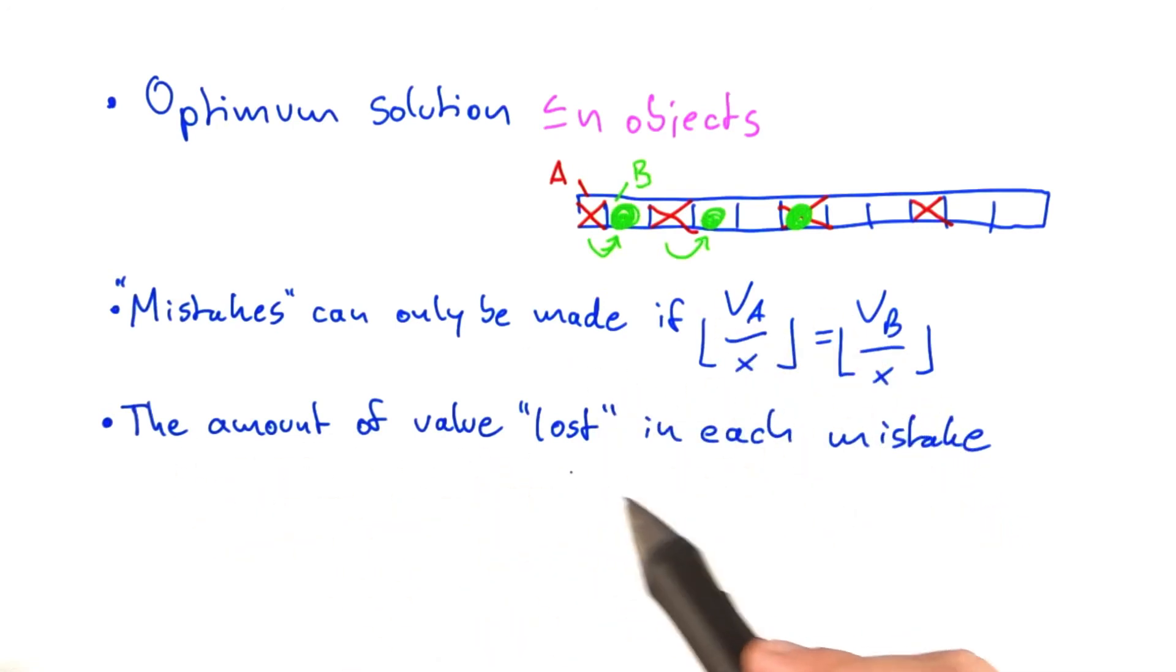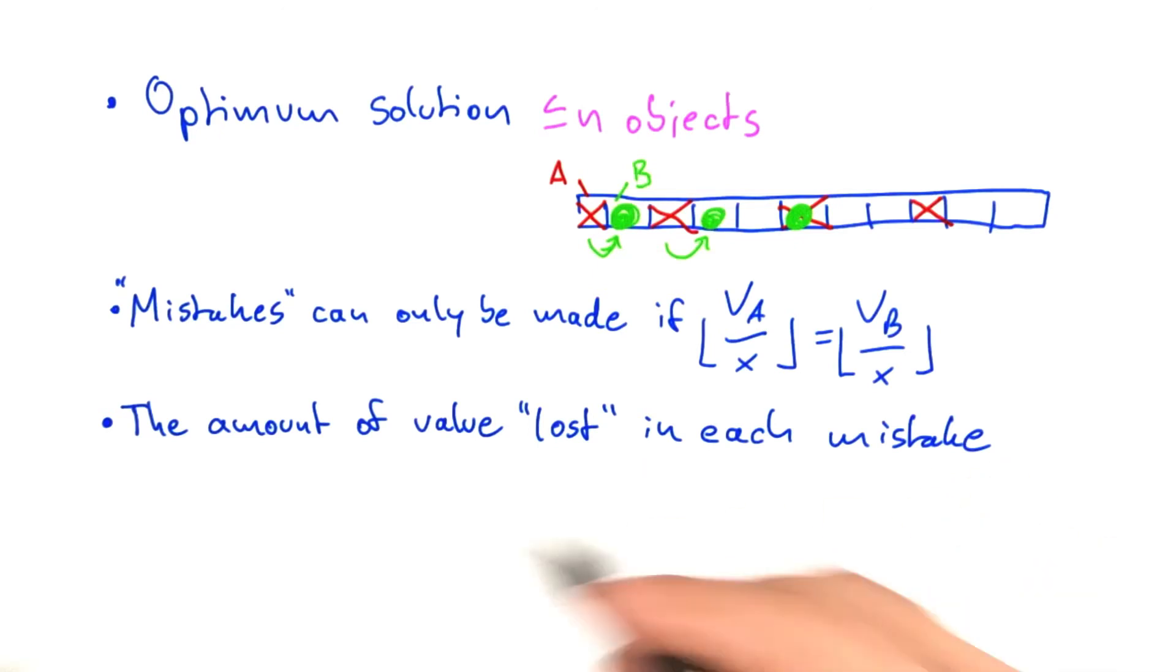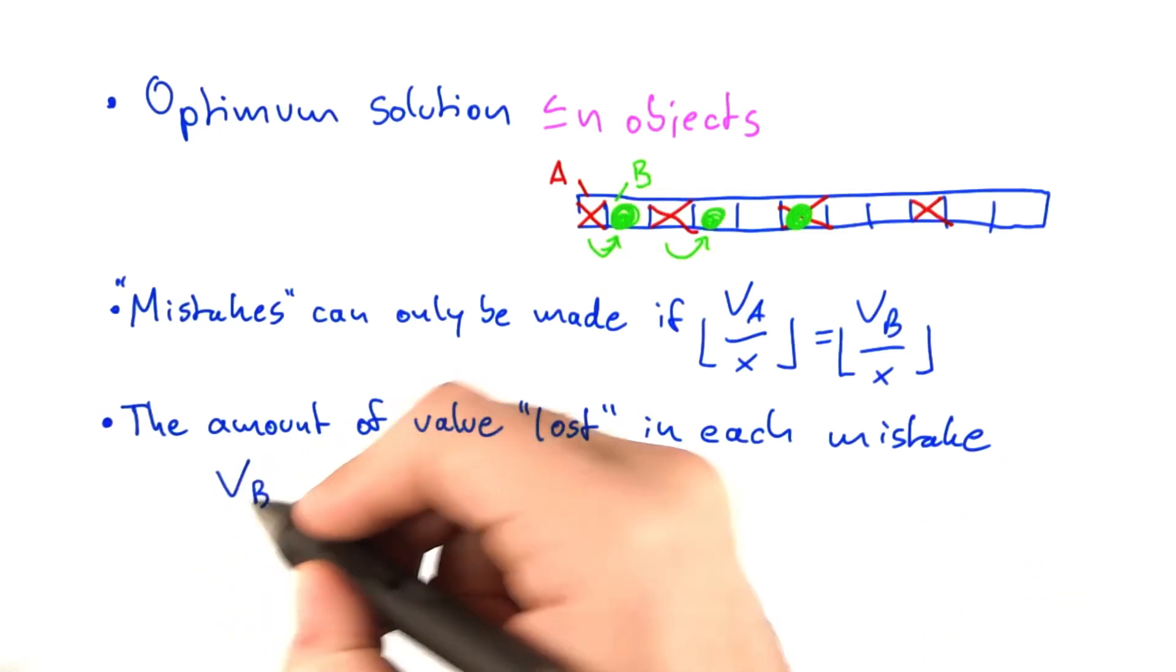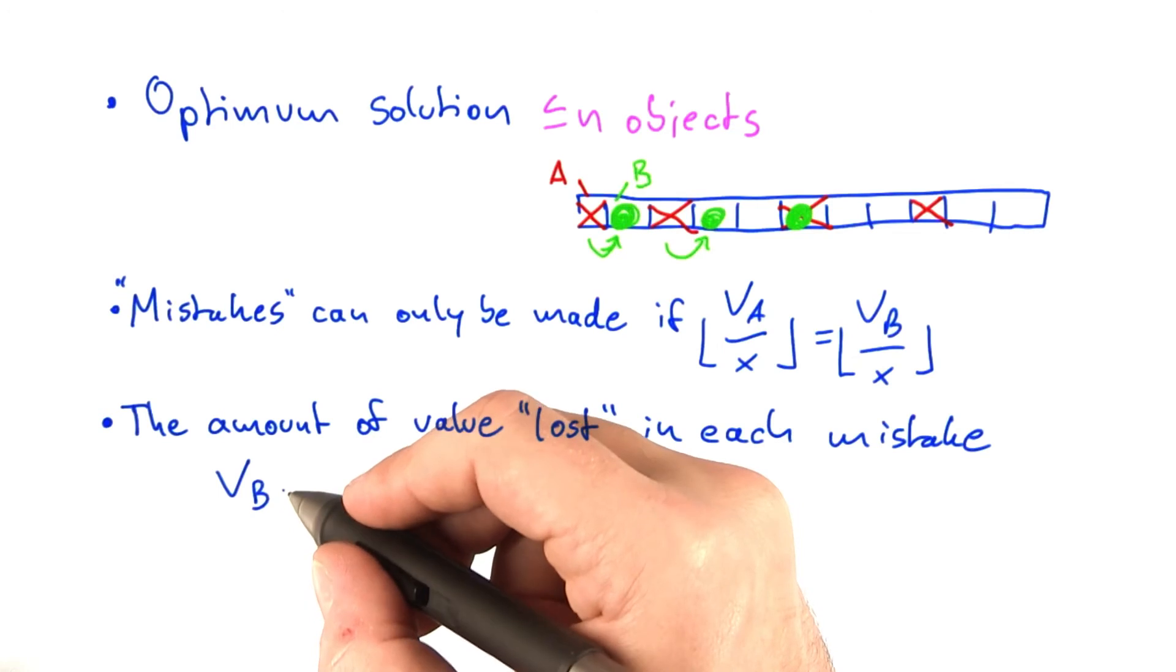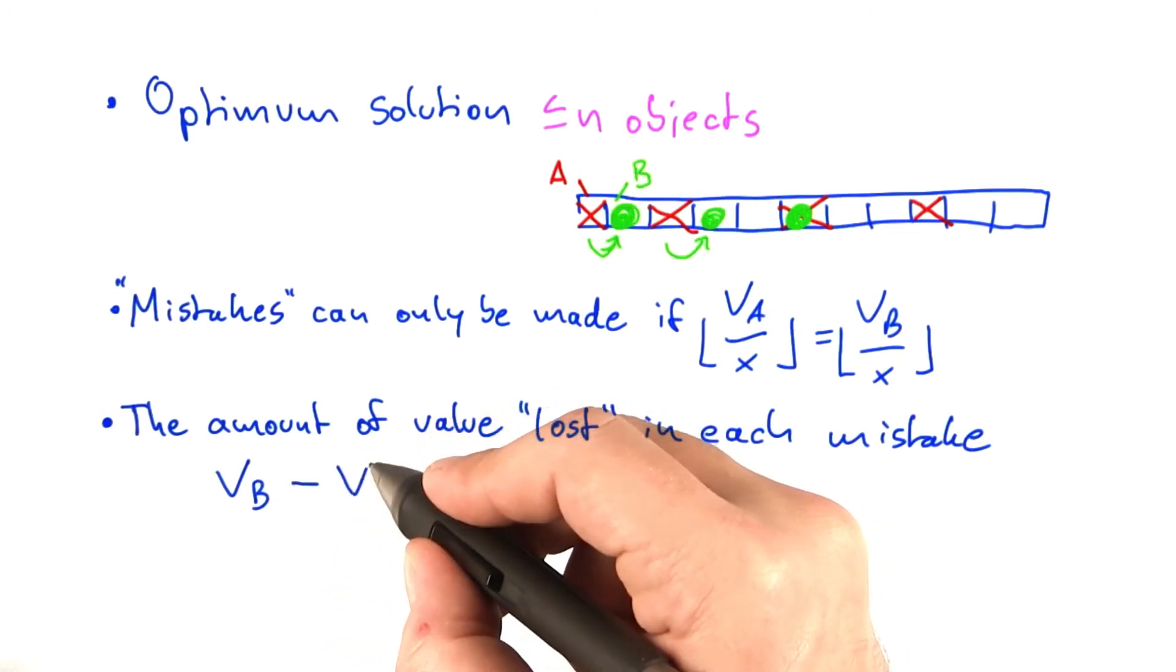Now the amount of value lost in each mistake that we make is of course the value of the object b, which is the more valuable object we should have taken, minus the value of object a.